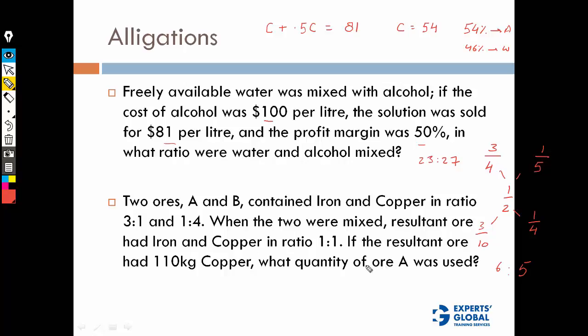If the resultant ore had 110 kg copper, what quantity of ore A was used? 6:5 is the total ratio of ore A and ore B. Resultant ore had 110 kg copper. The resultant ore has half iron, half copper.